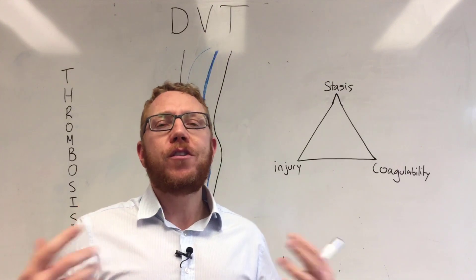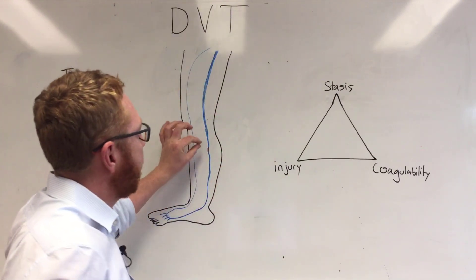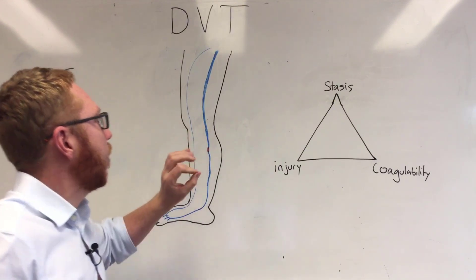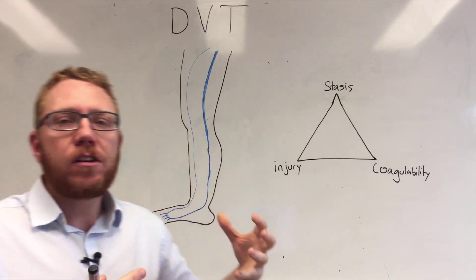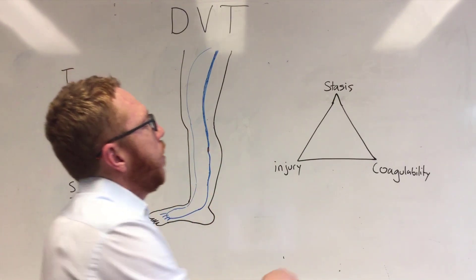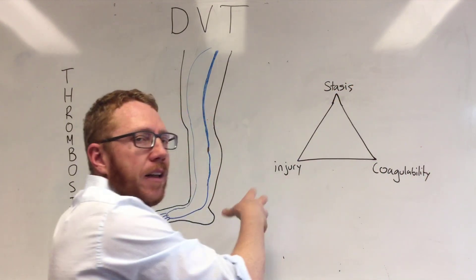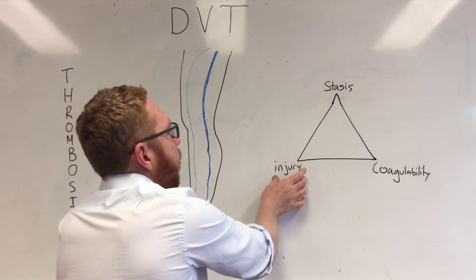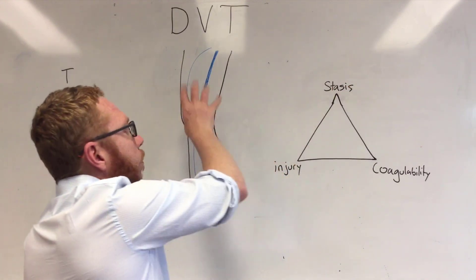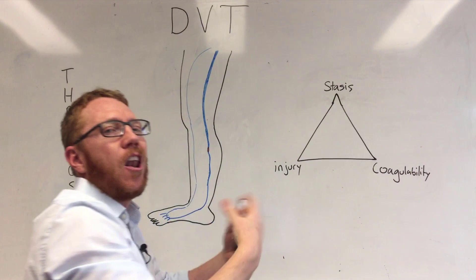With this question we've got the 32-year-old female with a DVT. The DVT is a clot in the deep veins of the leg. How does this clot form? We go back to Virchow's triad, which is a combination of stasis, coagulability, and injury. We need to have injury to the vein, stasis — slow-moving blood — and coagulability, meaning the blood is likely to clot.